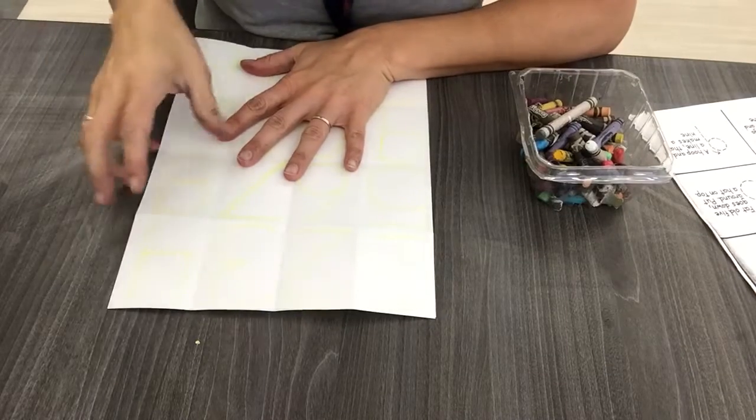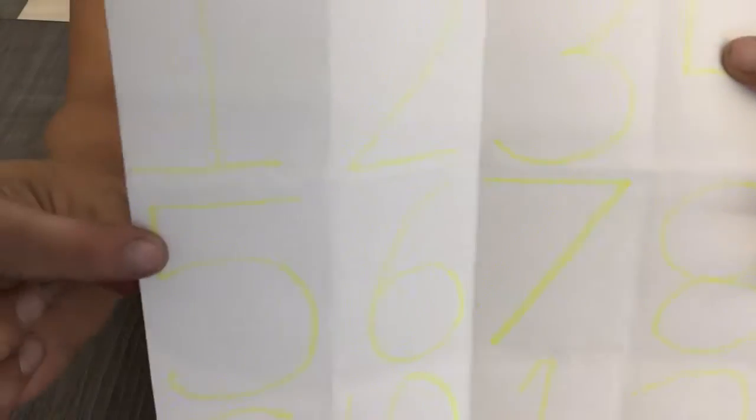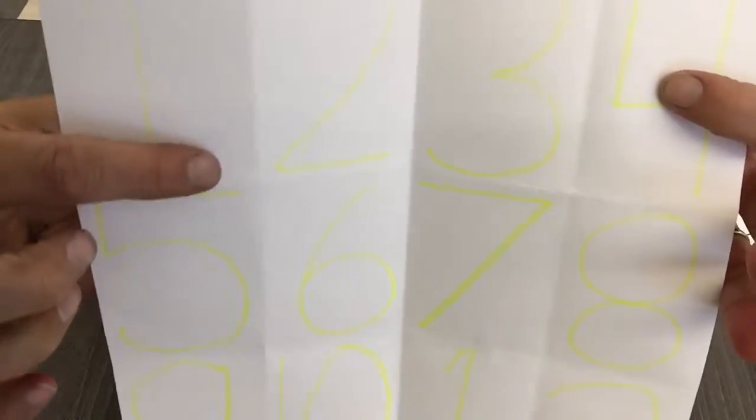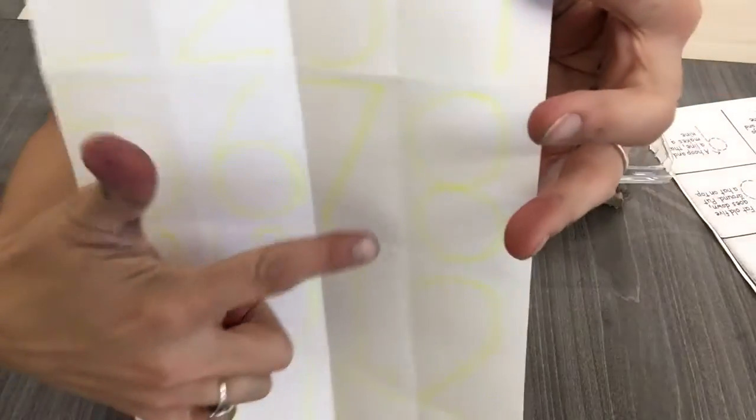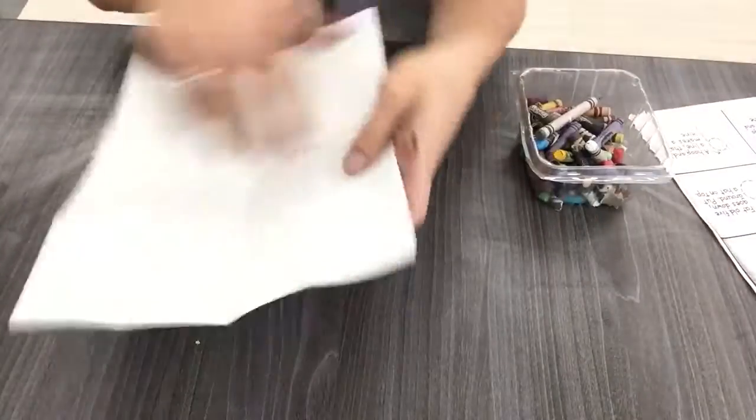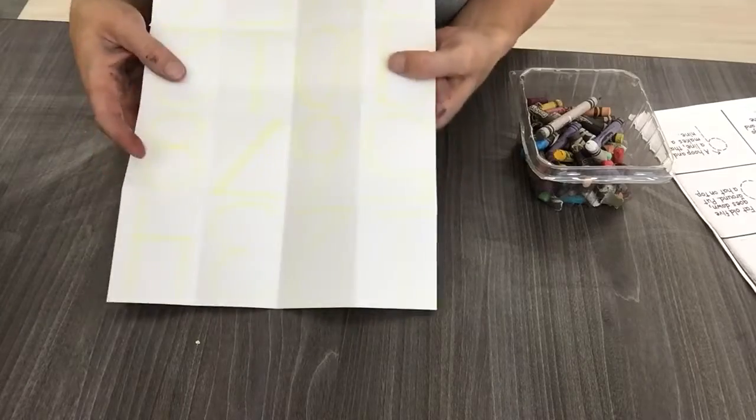All right guys, so we're making some art inspired by Jasper Johns, and he did paintings of numbers sometimes. So we're gonna do a drawing today of some numbers, and you're gonna get a piece of paper that looks like this.